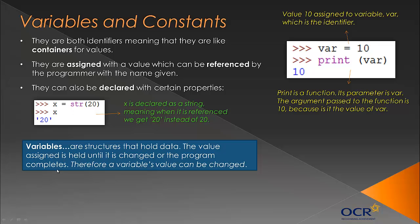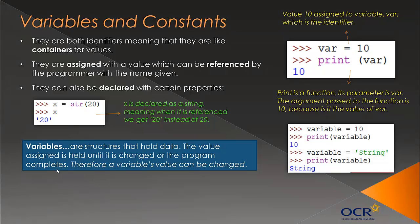Here's a definition for variables: variables are structures that hold data. The value assigned is held until it's changed or the program completes. And therefore - this is the key bit - a variable's value can be changed during the program's execution. Here we've got a bit of code which just shows this change happening. We've got a variable assigned with 10, and afterwards I change it from 10 to a string. Clearly it shows that variables have the ability to change during execution.